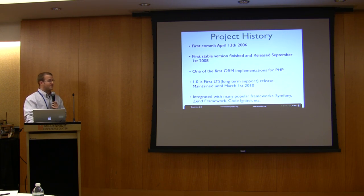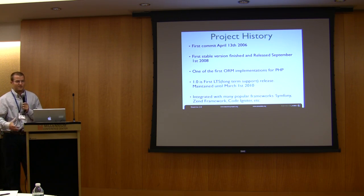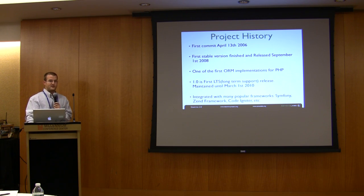It was one of the very first true ORM implementations in PHP. There were a lot of other object relational mappers for PHP, but nothing that really followed a lot of the same specifications that exist in other languages like Java. The 1.0 version was a long term support release and it's maintained until March 1, 2010.